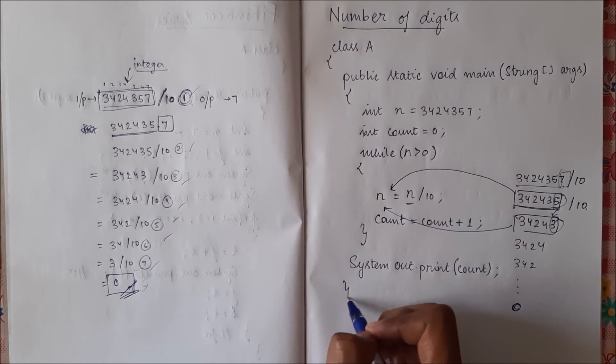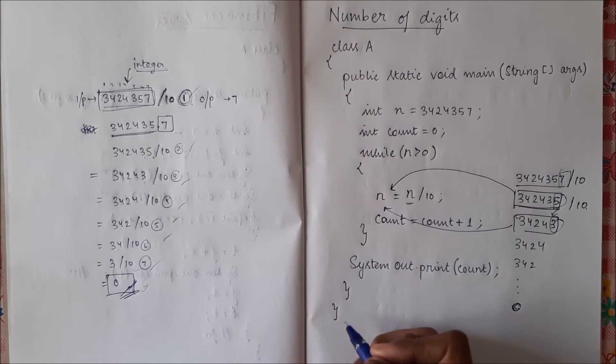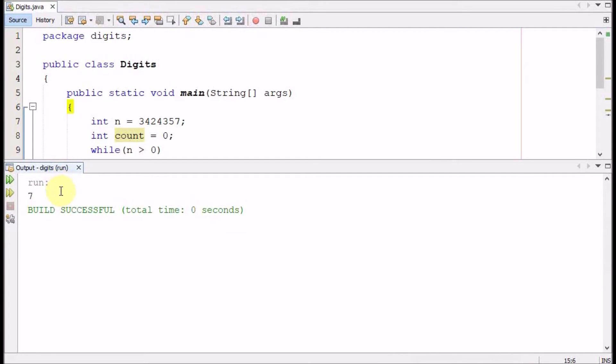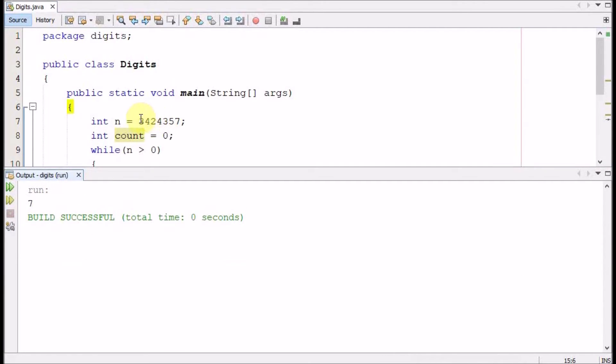Now let's run this program. So here I have typed the program in NetBeans IDE. So let us run this program and see, our output is seven for the given input, our output is seven.